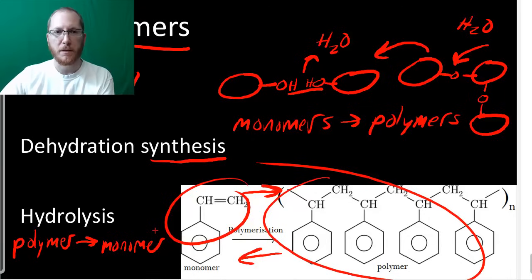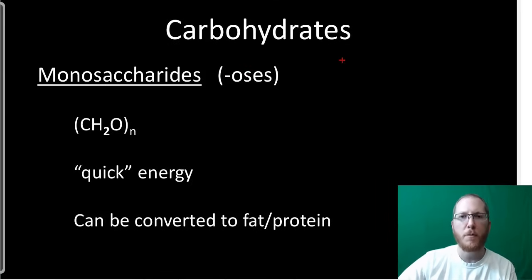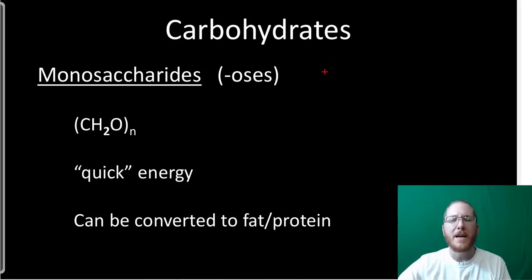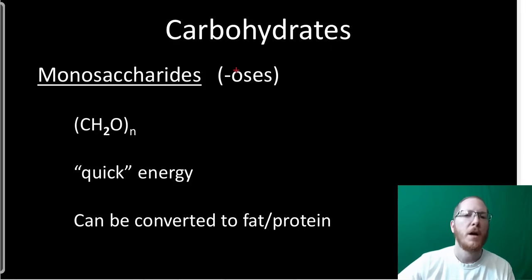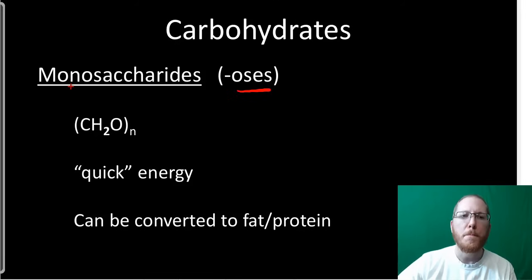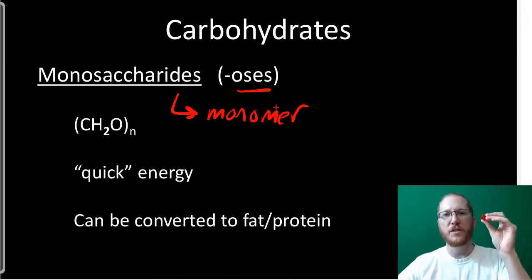Moving on, we have carbohydrates — our first macromolecule. You see carbohydrates on the back of food labels. They typically end in '-ose': fructose, lactose, galactose, glucose — that's a common ending for sugars. We're going to call their monomers monosaccharides. When I say monosaccharide, that's the monomer — the small piece, the single Lego piece, the smallest subunit.